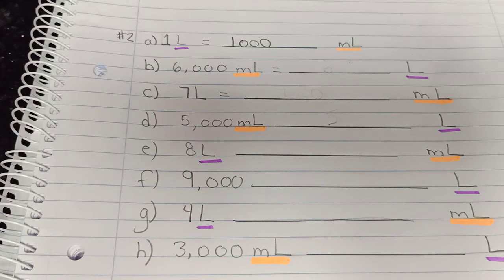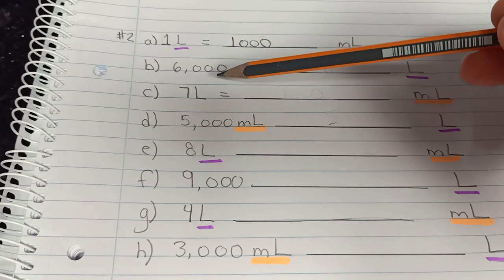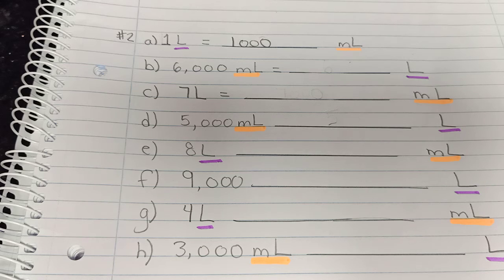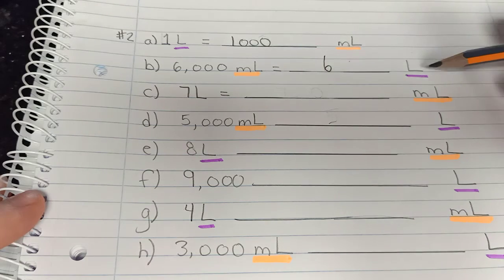So if I know that 1,000 is the same as one liter, how many 1,000s can I get into 6,000? So 1,000, 2,000, 3,000, 4,000, 5,000, and 6,000. 1,000 goes in six times and I need to put it's the same as six liters.